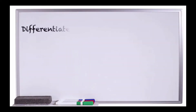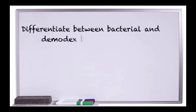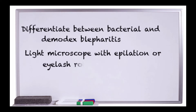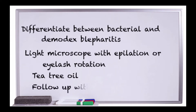When examining patients with blepharitis, remember to differentiate between bacterial and demodex blepharitis. Do this by utilizing either a light microscope with epilation or eyelash rotation. Incorporate tea tree oil on the eyelash margins to reduce demodex populations and always follow up with patients to make sure overpopulation doesn't return.